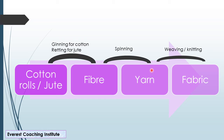Once converted into yarn, we give it a fabric shape. The fabric that you use is made from cotton. In that process, we use weaving and knitting. In knitting, we make warm clothes. Through both knitting and weaving, we make fabric.